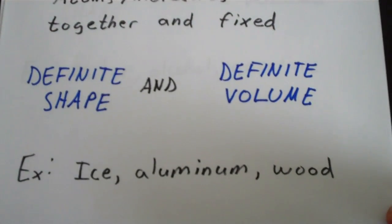Examples of solids include ice, aluminum, and wood, and a great many other solids.